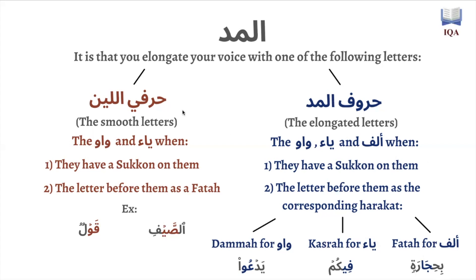Now, harf al-leen could be referred to as the smooth letters. They're called smooth letters because they're very easy on the tongue. These are the waaw and the ya when they have a sukun on them, but the letter coming before it has a fatha. So whenever you have a waaw or a ya with sukun and the letter before it has a fatha, this waaw and this ya are referred to as harf al-leen — a smooth letter. Examples include 'qawl' and 'as-sayf'.